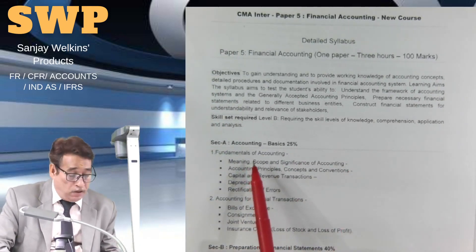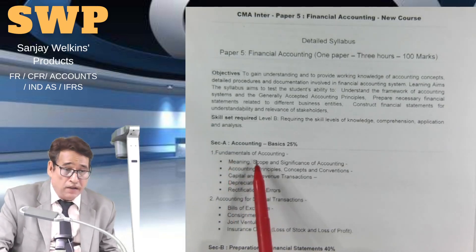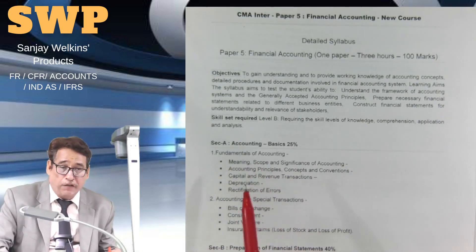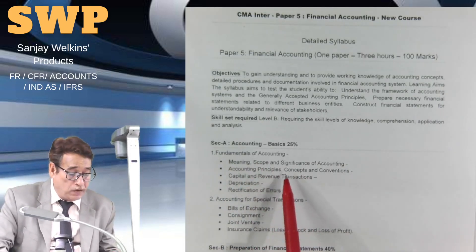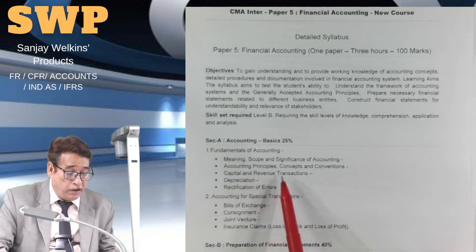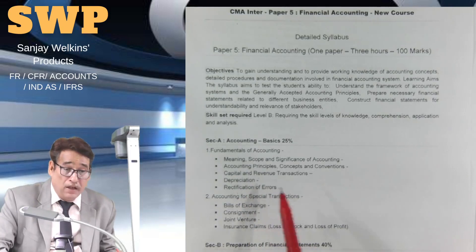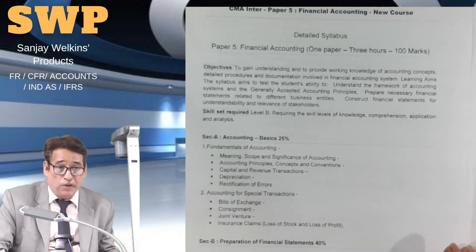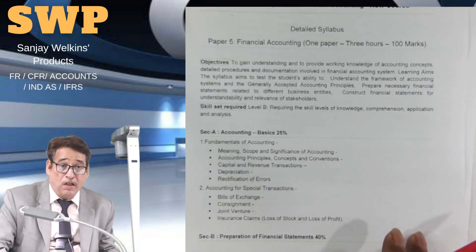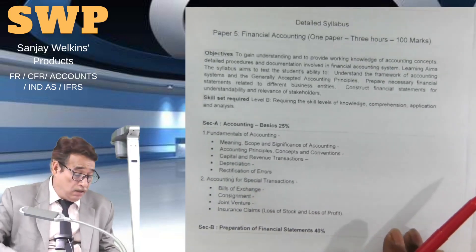Under Section A, we are supposed to study the fundamentals of accounting — basically the theoretical aspects, meaning scope and significance of accounting, accounting principles, concepts and conventions. Besides that, you need to have knowledge regarding capital and revenue transactions, depreciation, and rectification of errors. Through my experience, I have seen that students tend to neglect these topics — don't do that, as lots of examination questions come from this part.